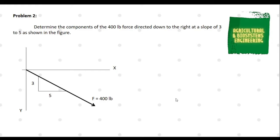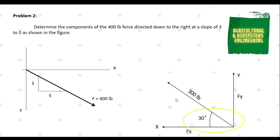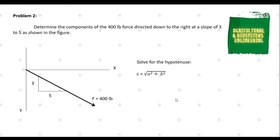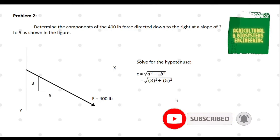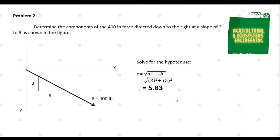Let us proceed to the next problem. Determine the components of the 400 pounds force directed down to the right at a slope of 3 to 5 as shown in the figure. Instead of having the angle, what is given is the slope of the force. To solve the X and Y components with the slope, we first solve for the hypotenuse using the Pythagorean theorem: c equals the square root of a squared plus b squared. Substituting the slope dimensions, c equals the square root of 3 squared plus 5 squared. We solve and get a hypotenuse of 5.83.